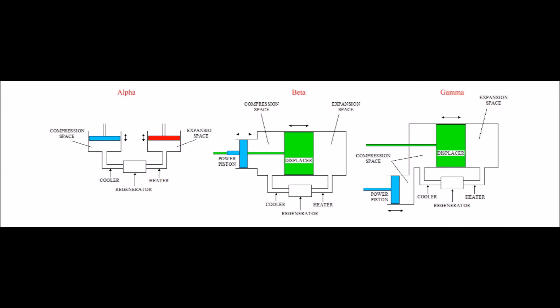Beta engine has one power piston and one displacer piston. An important thing to be noted here is both power piston and displacer piston work in a single cylinder.